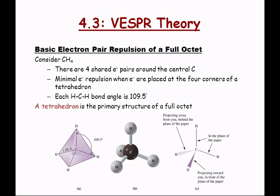Let's consider a different type of molecule — ammonia, NH3. Ammonia is very similar to methane in its electronic structure, but when you look at the actual molecular structure, it's a little bit different. I'll show you the differences.